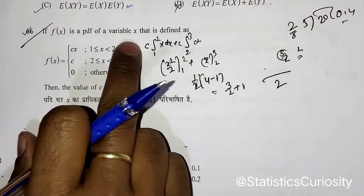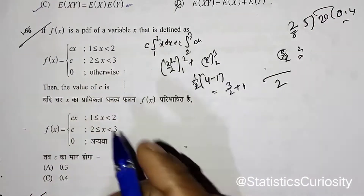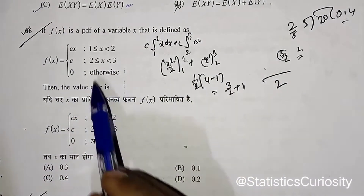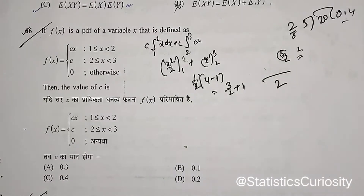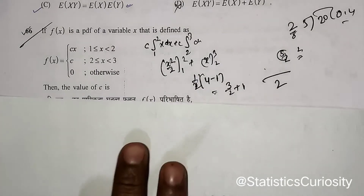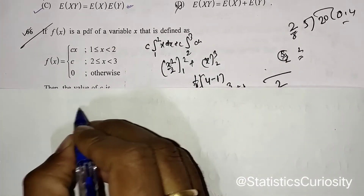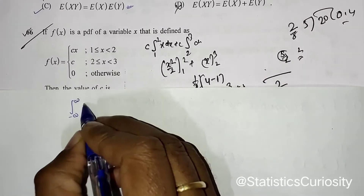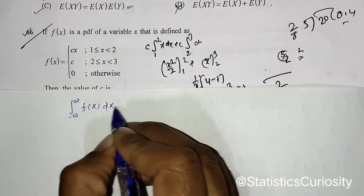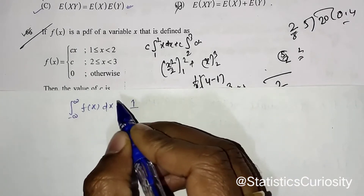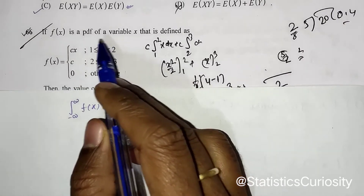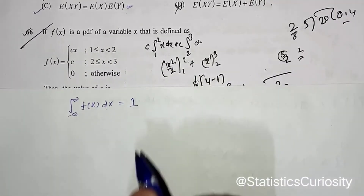Second question: f(x) is a PDF of a variable X defined as f(x) = cx over one interval and c over another. We need to find the value of c. To solve this, we know that the overall integration of any PDF equals 1 — the same as saying the sum of probabilities of all possible outcomes is 1.